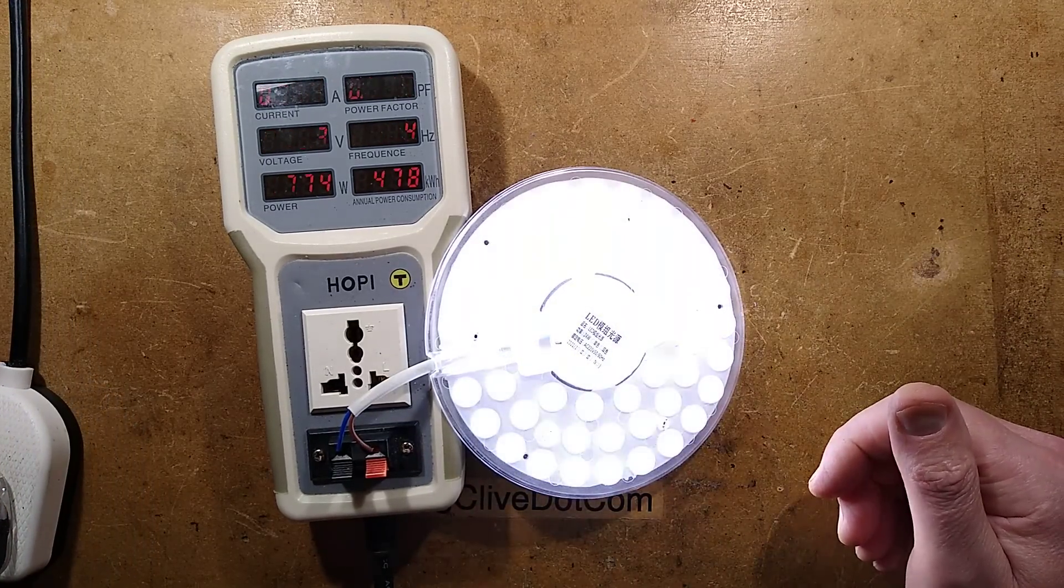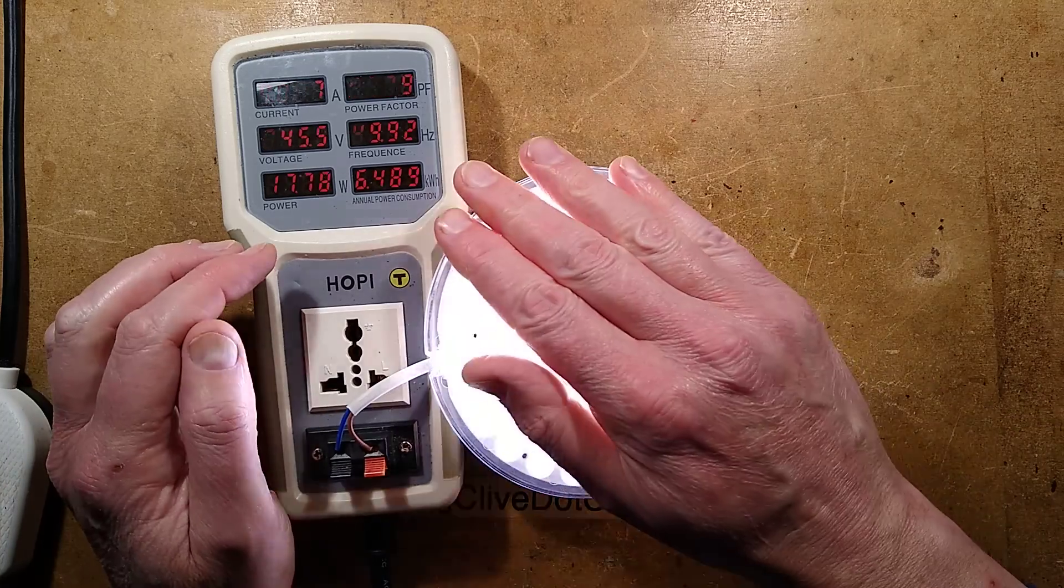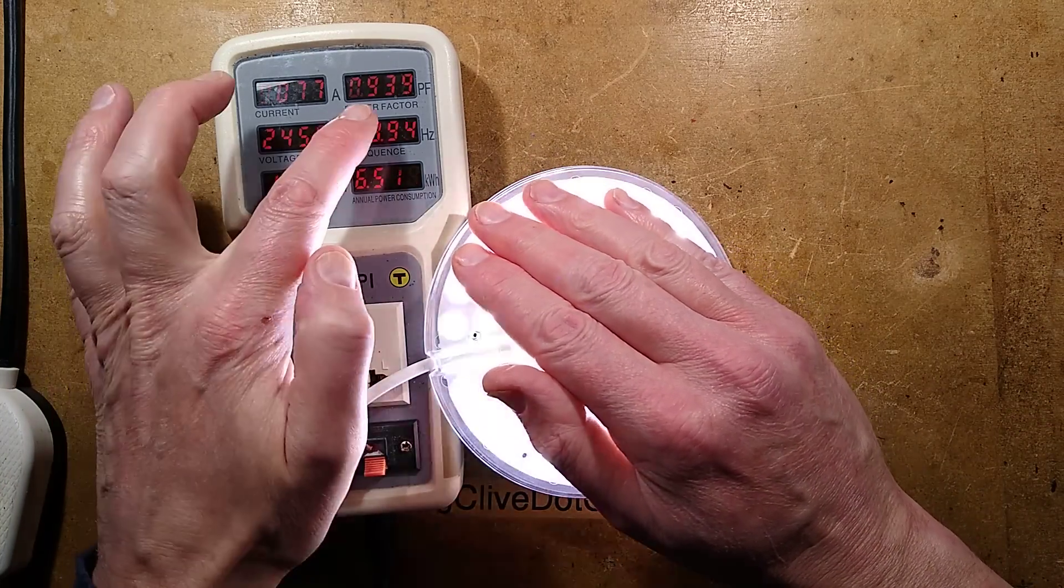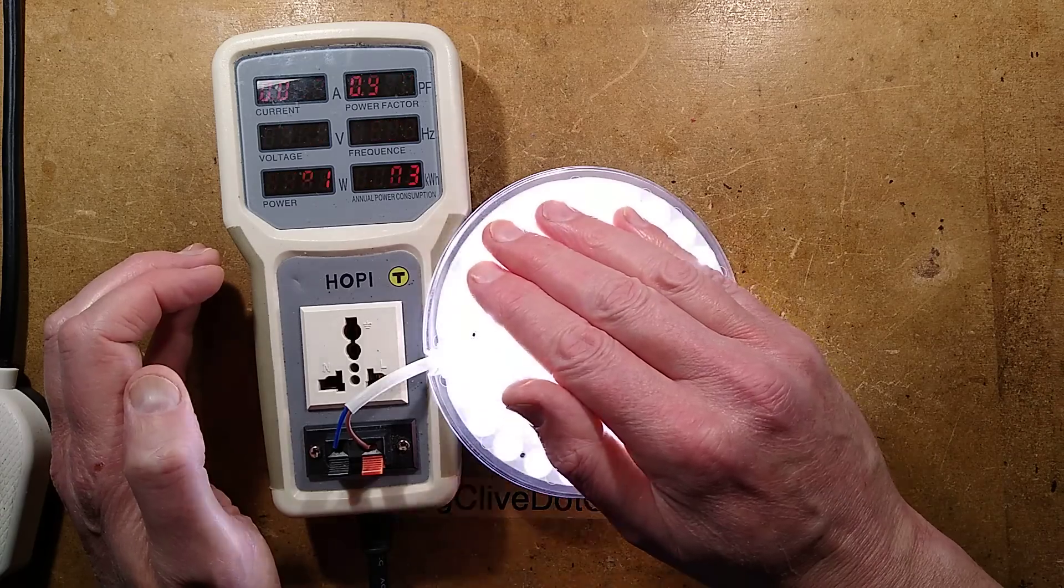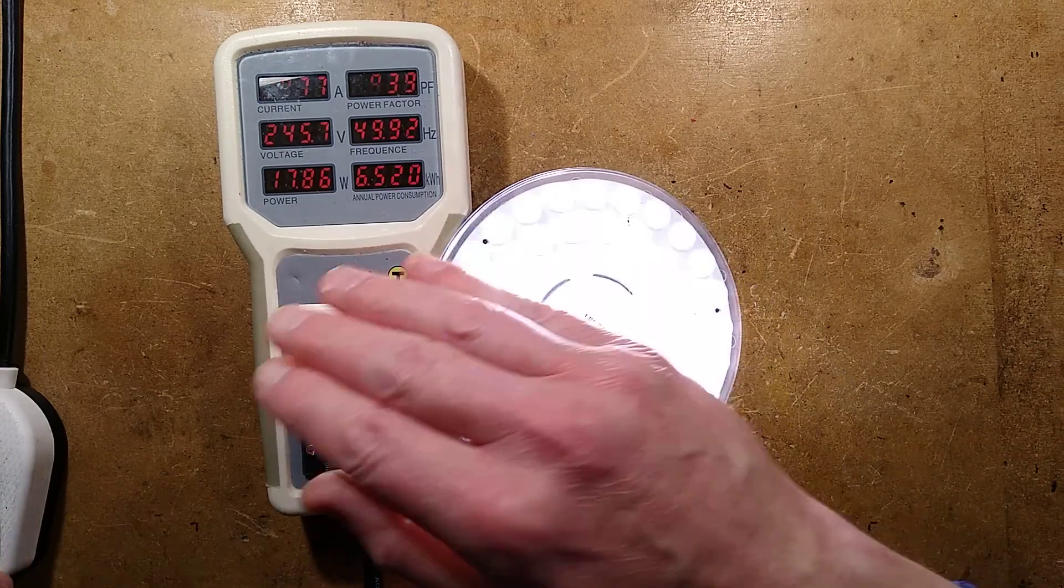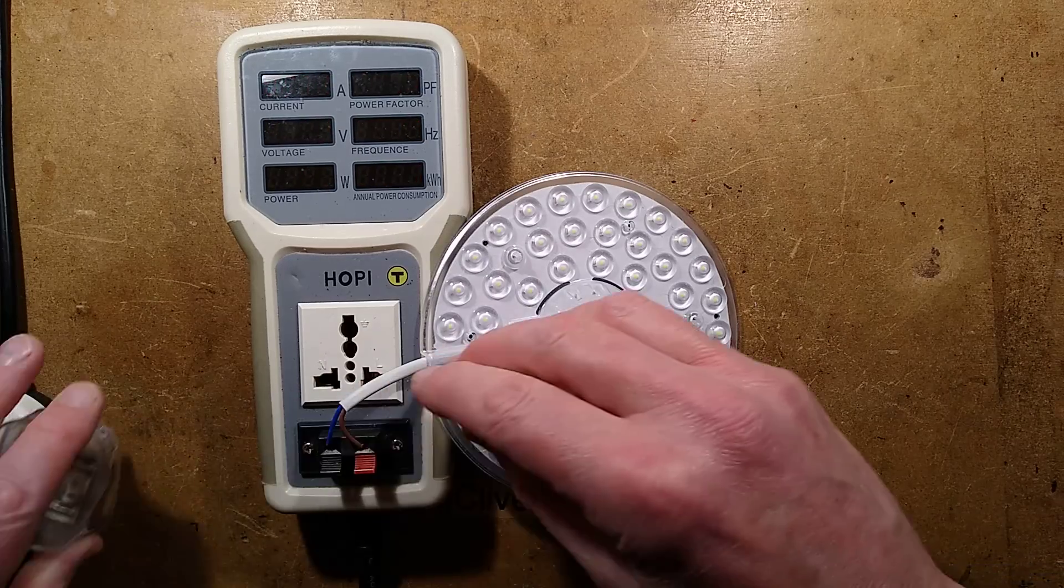That is because there's no smoothing and they could have added smoothing. The power is 17 watts, the power factor is 0.9 which is very good, current 77 milliamps. Okay, let's open it up and take a look inside. That is annoyingly flickery.